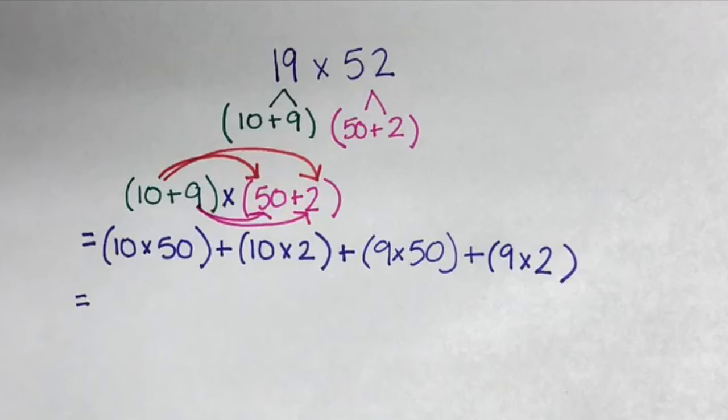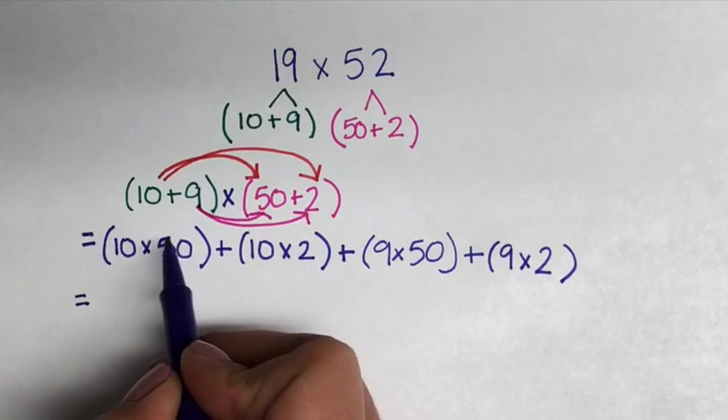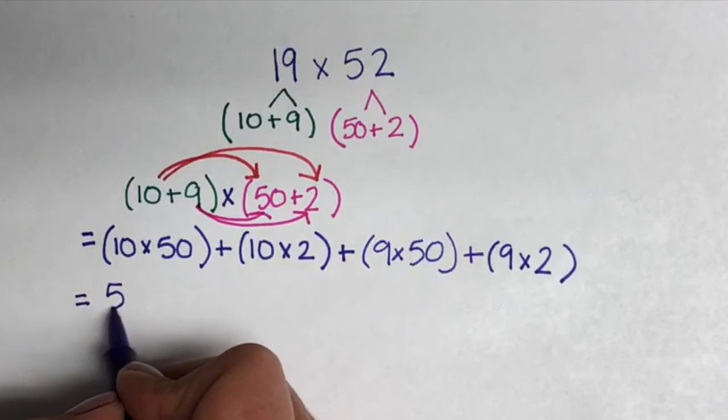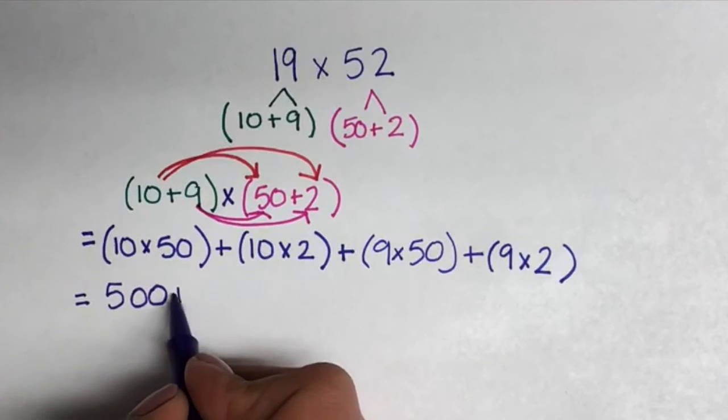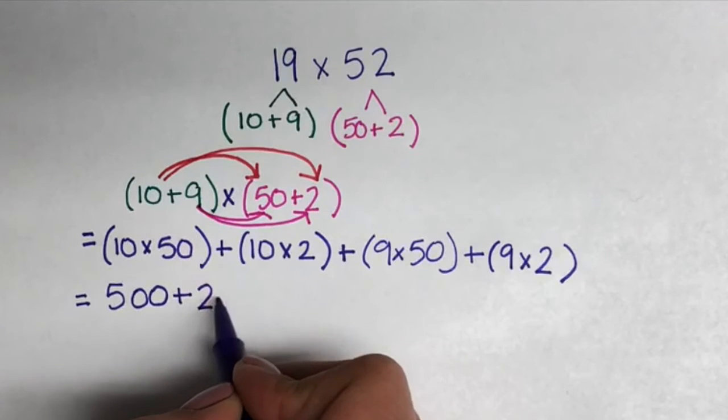After you have written all of these numbers down, you are going to write the product to each one below. 10 times 50 equals 500. We're going to add all the partial products together. Next we have 10 times 2, which equals 20.